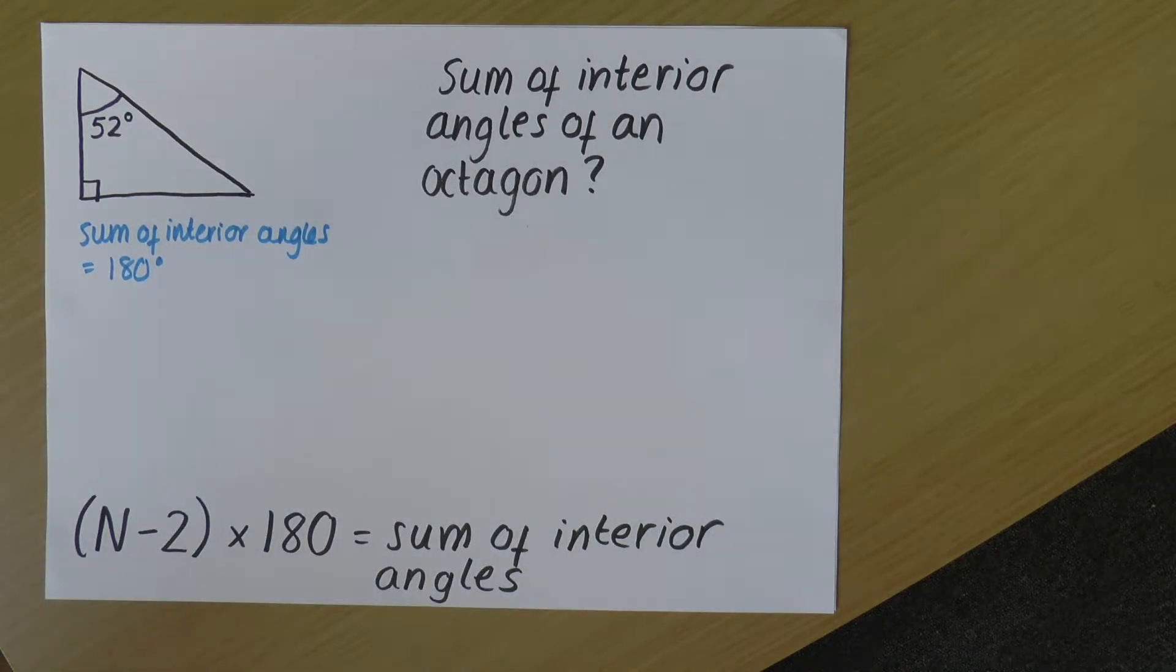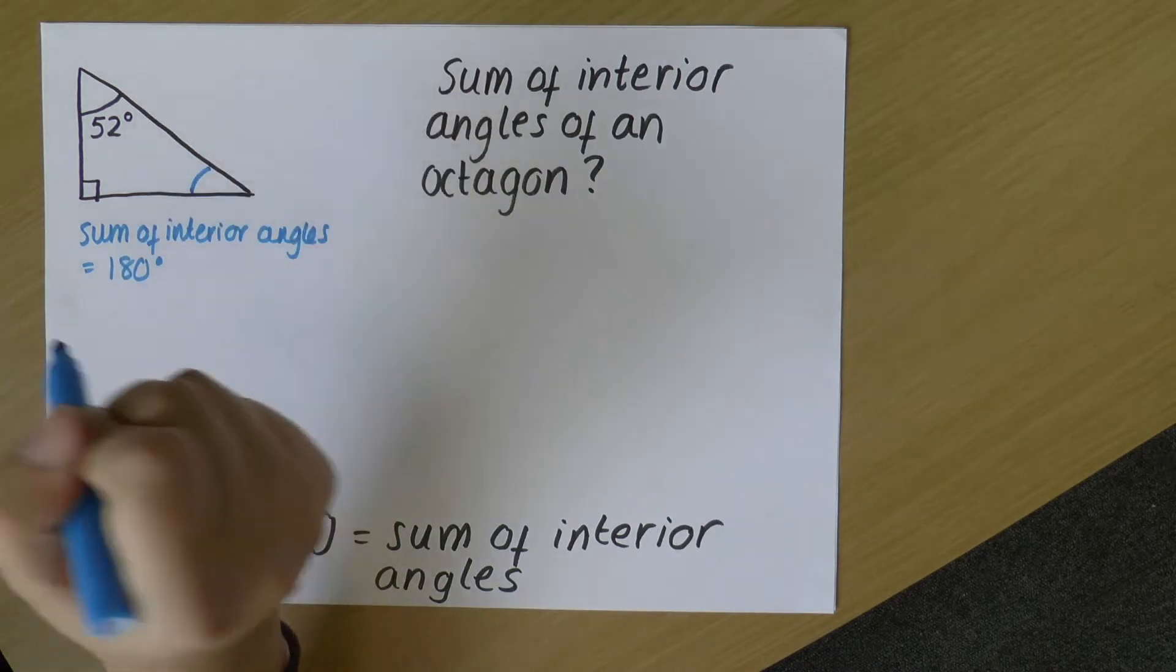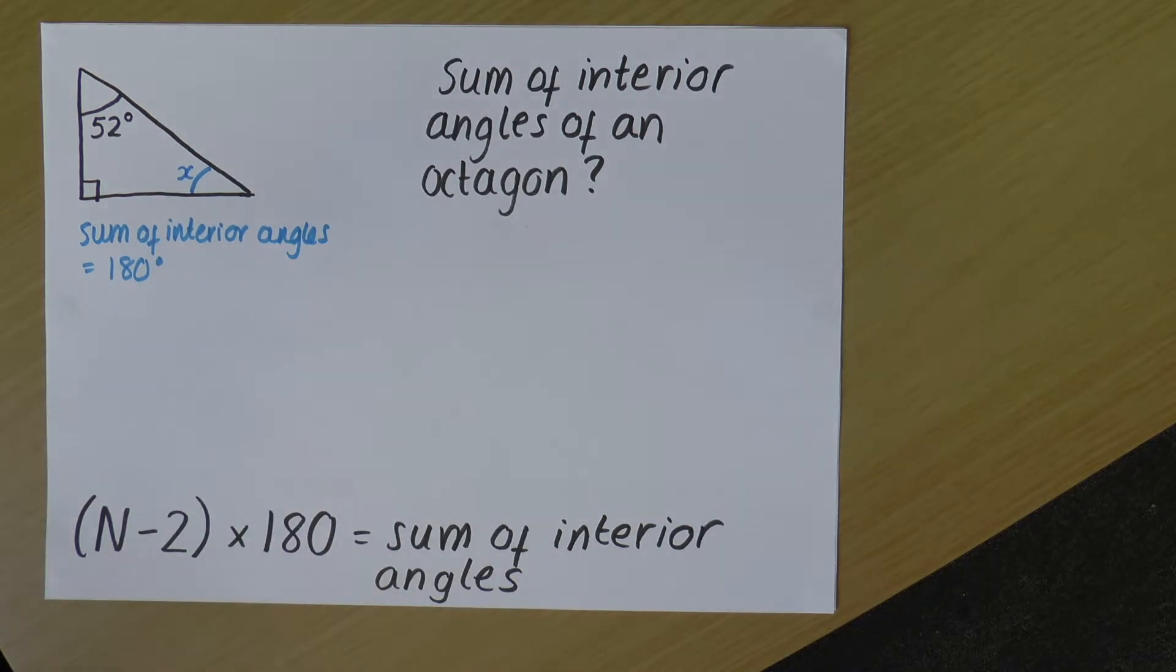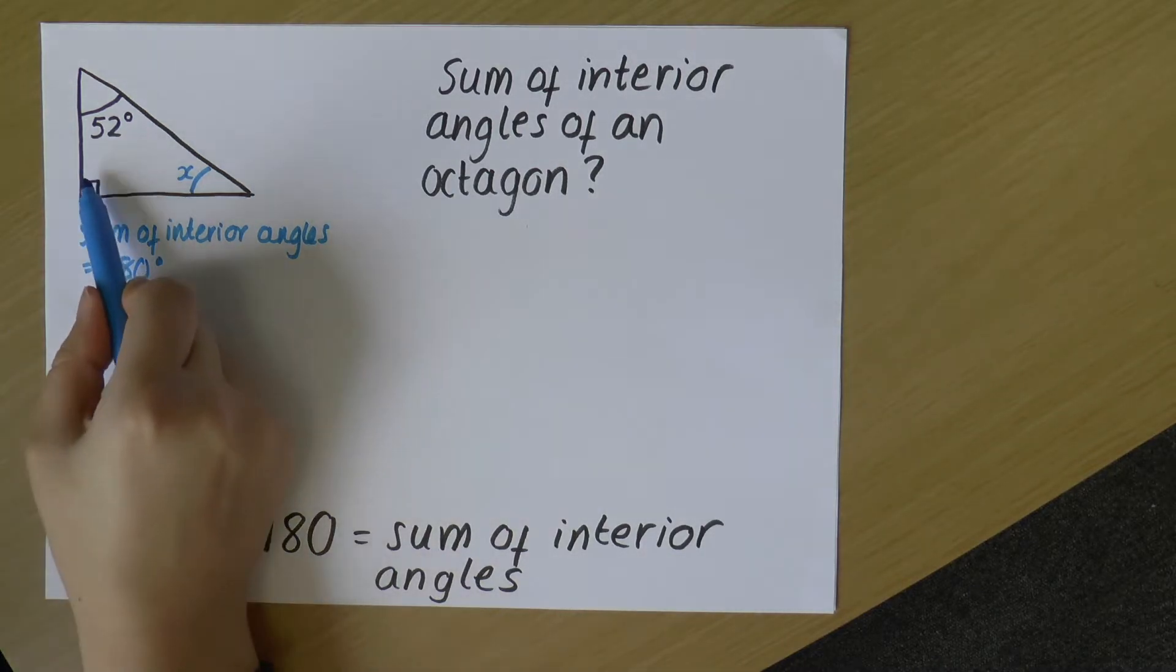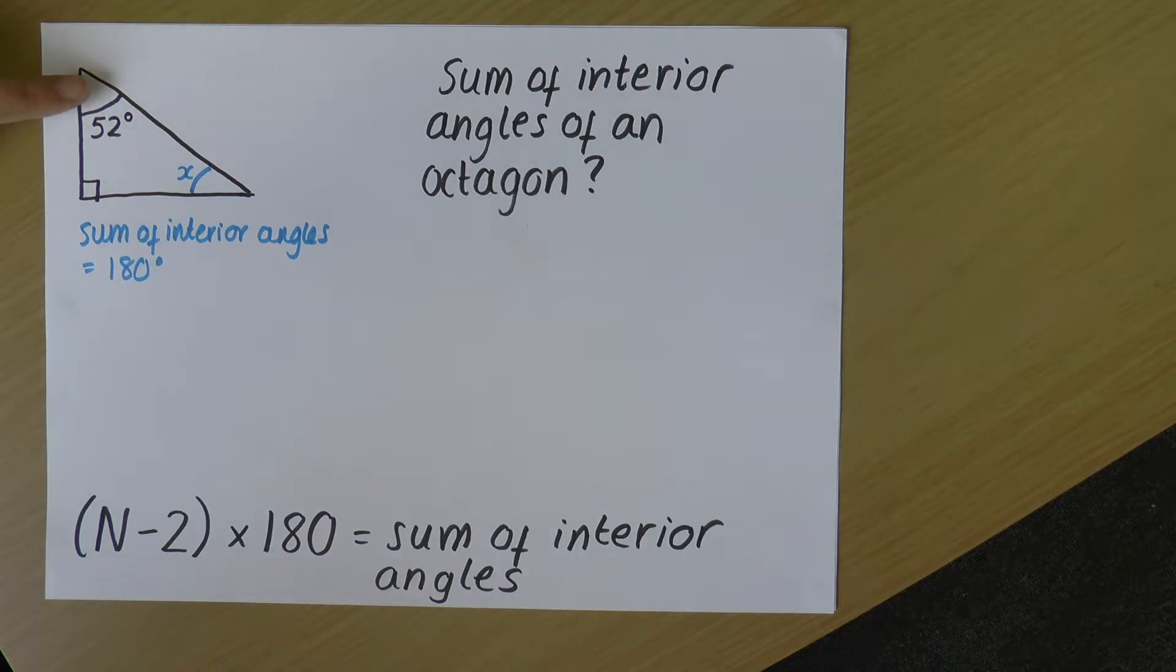Now, this is a useful piece of information to know, because knowing the sum of the interior angles will allow me to calculate what this angle is. So I'm going to call that angle x. Remember, x just means any number. So I have two angles that I know here. I've been given this angle and this one. So this has 52 degrees.